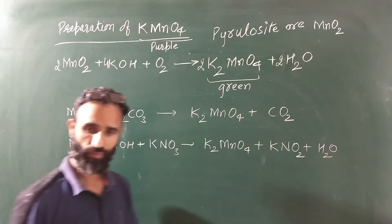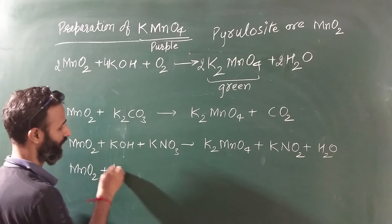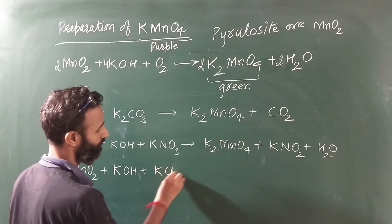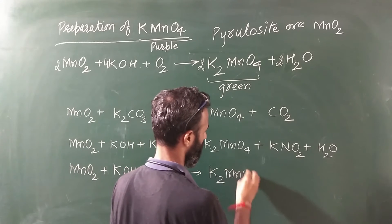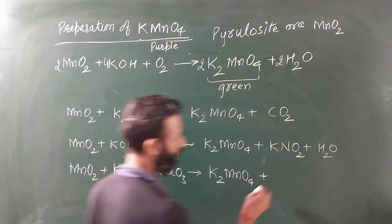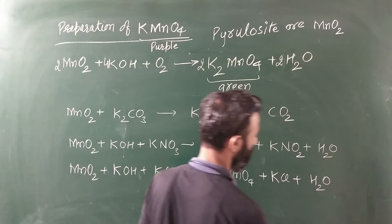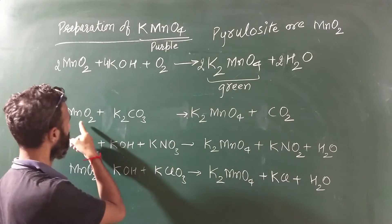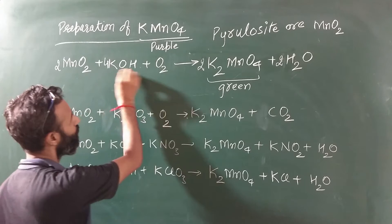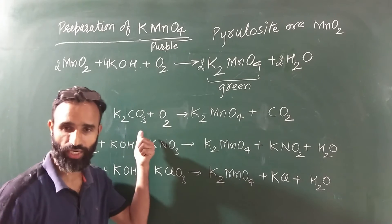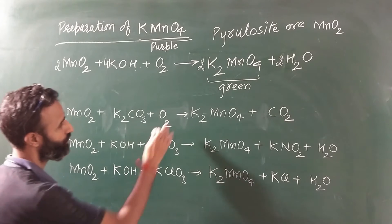Along with H2O, or we can use potassium chlorate to give K2MnO4 plus KCl and H2O. Just balance these equations. MnO2, K2CO3, and O2. Instead of KOH we are using K2CO3, so O2 should be there. Now balance it.